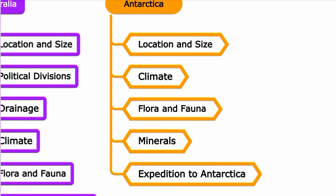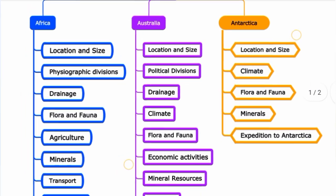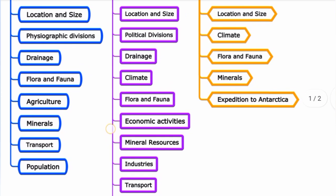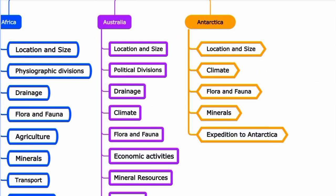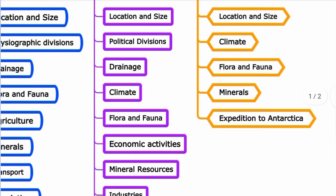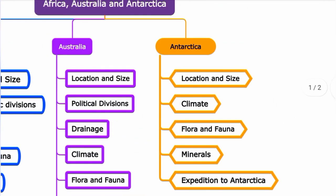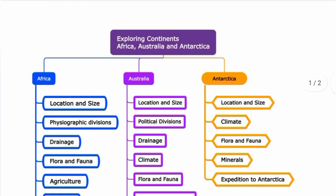In summary, Australia is the largest island and smallest continent; Antarctica is the southernmost and 5th largest continent. The Aurora phenomenon occurs when charged particles from the sun interact with atoms in the upper atmosphere. This mind map covers Africa, Australia, and Antarctica across location, size, physical divisions, drainage, flora and fauna, climate, economic activities, minerals, transport, and population. Thank you for watching — next lesson's mind map will be in the next video.